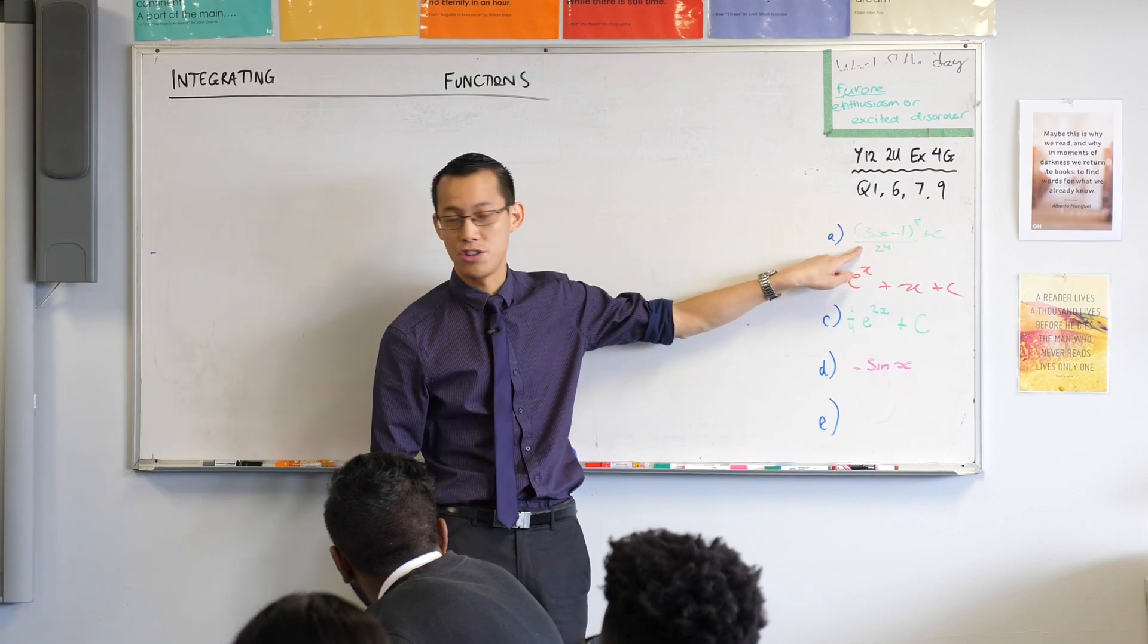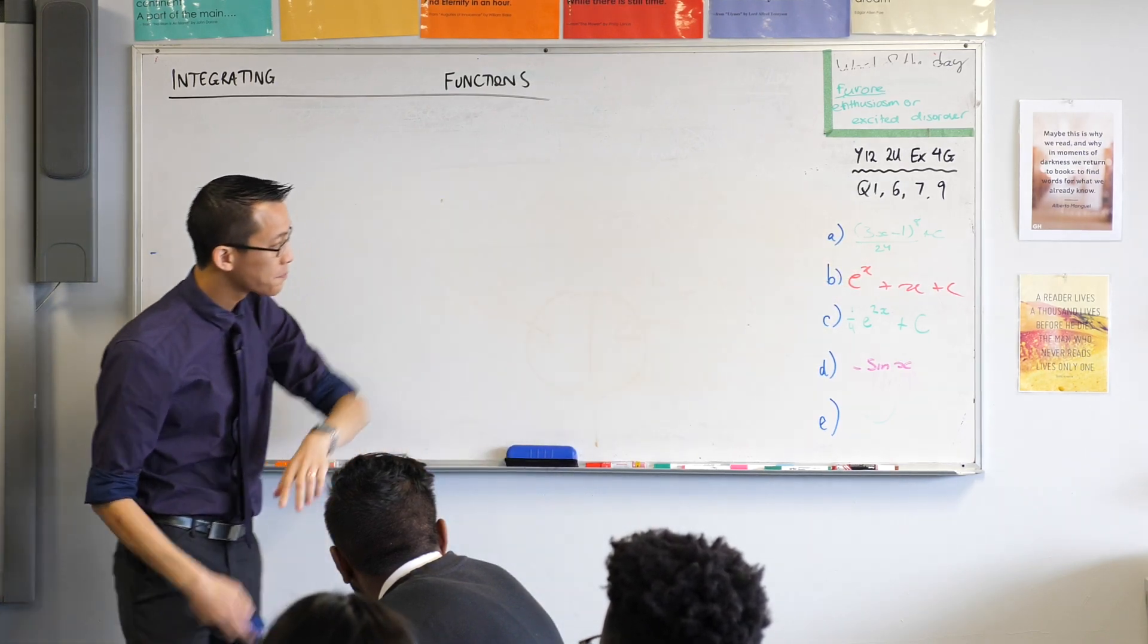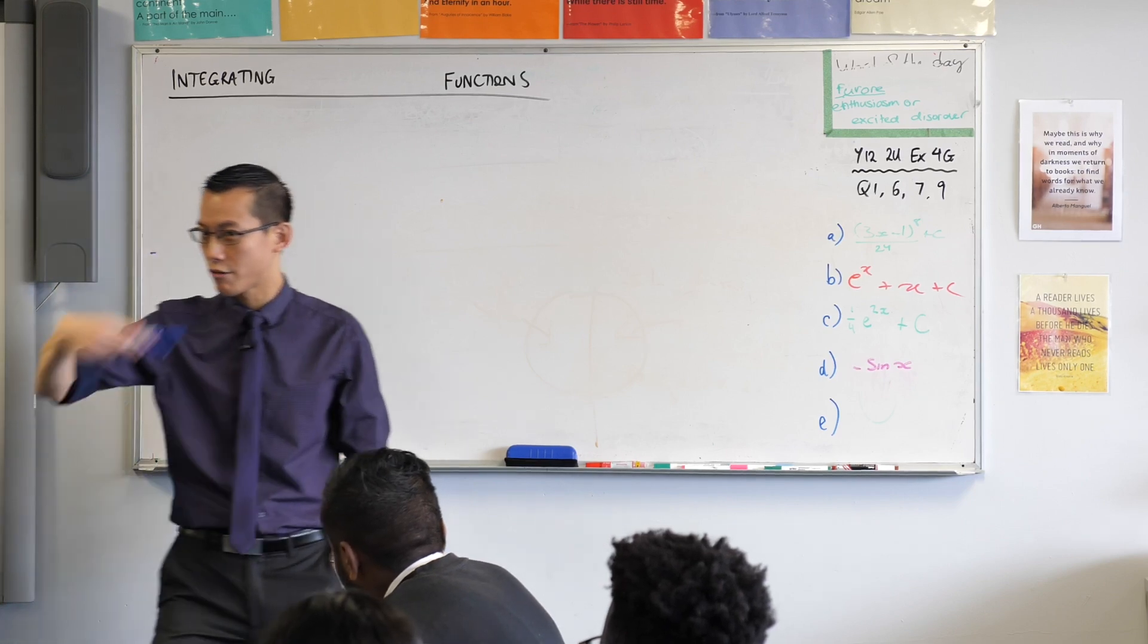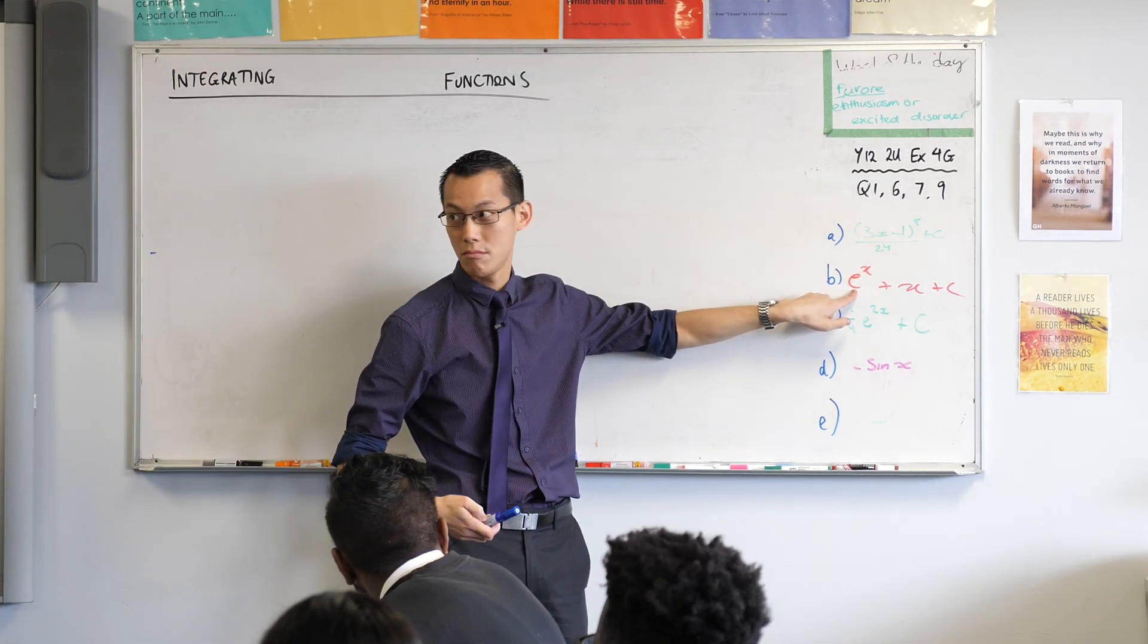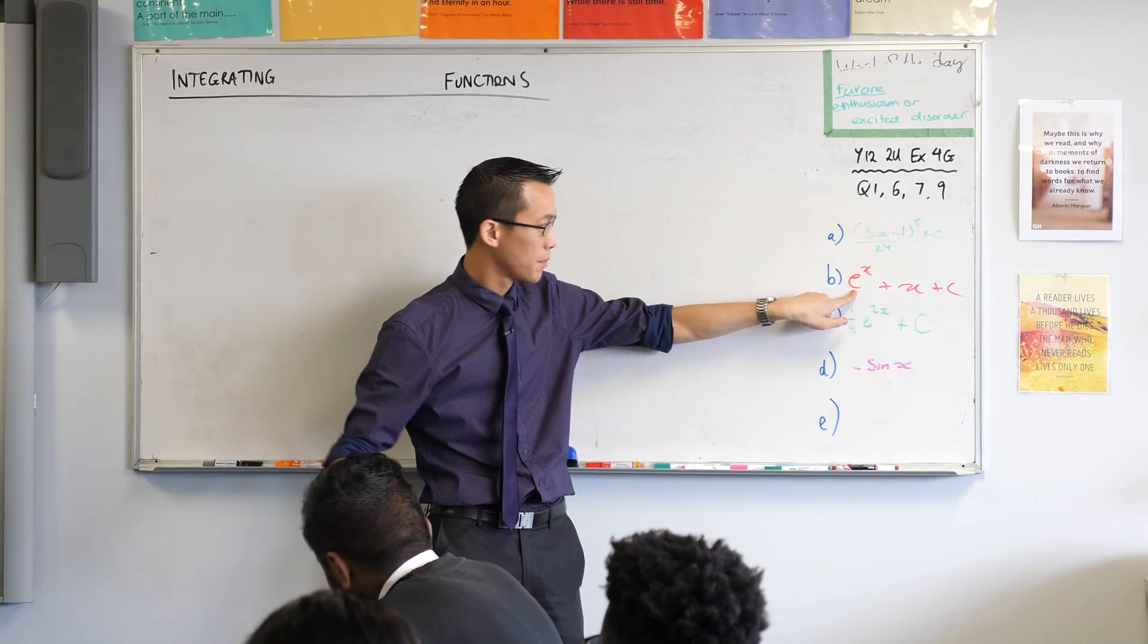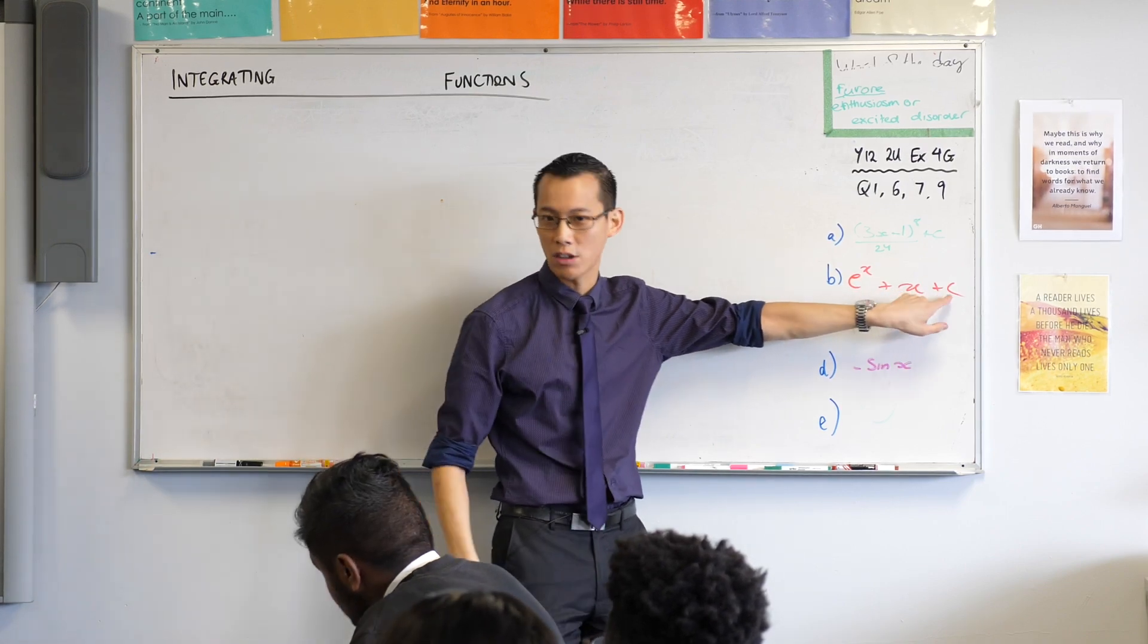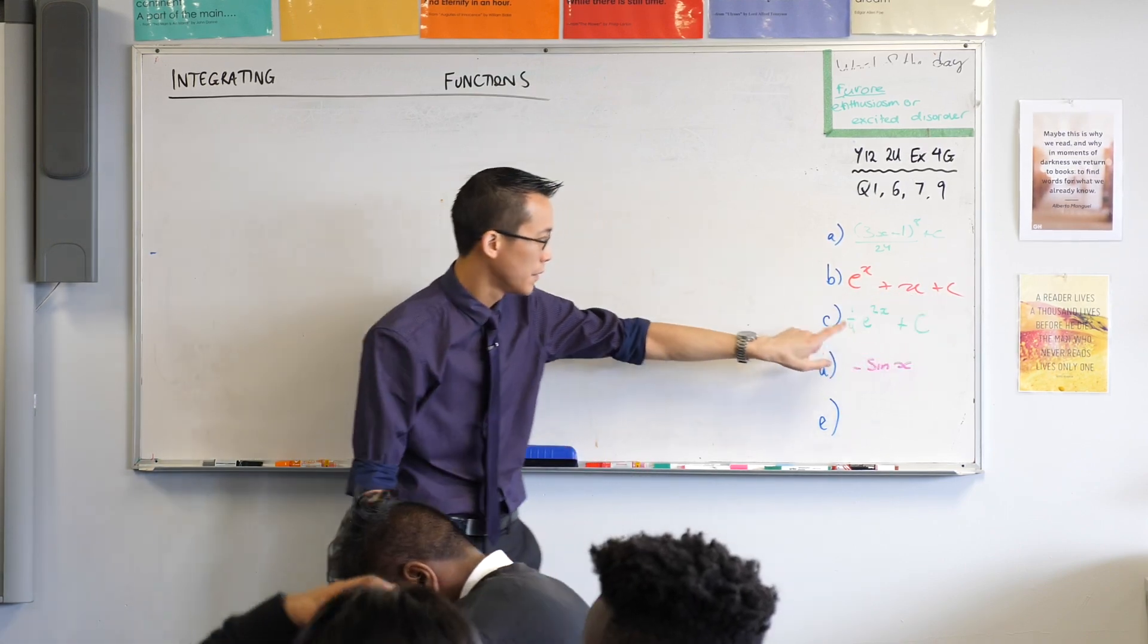And you could check that by differentiation, as you could with all of them. Part b, we've got e to the x, which integrates up into e to the x, thumbs up. You've got that plus 1, which integrates up into x, and then our constant of integration. Looking good?